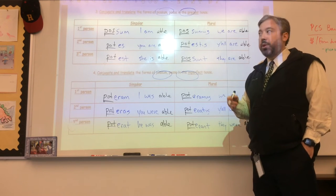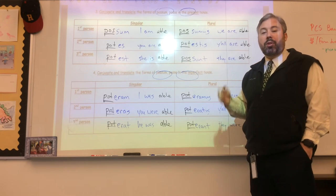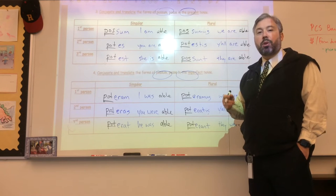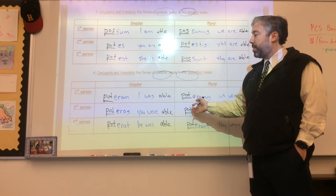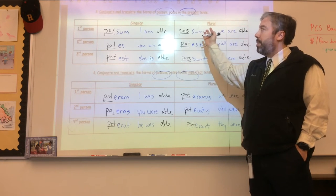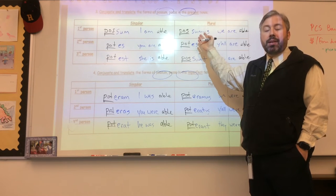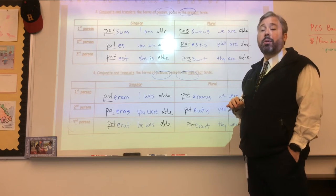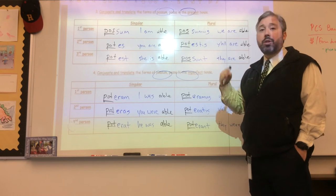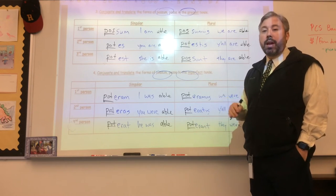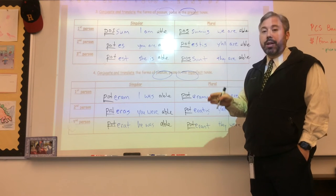So you can see the forms poteram, poteras, poterat, poteramus, poteratis, poterant for the imperfect forms of to be able. And then up here in the present forms - I am able, you are able, she is able, and so the rest you guys are good on.